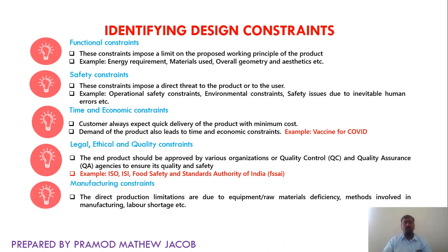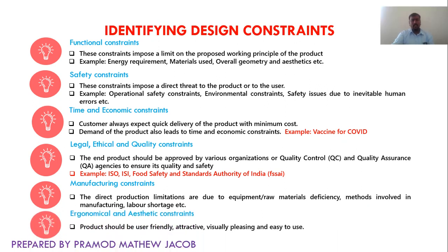Next is manufacturing constraints. While manufacturing a particular product, there may arise restrictions like shortage of labor, deficiency of raw materials, or inadequate equipment used for developing that product. Next is ergonomical and aesthetic constraints — the product being developed should be user friendly, attractive, visually pleasing, and easy to use. The designer has to identify all these constraints and plan accordingly so that the product will be successful.